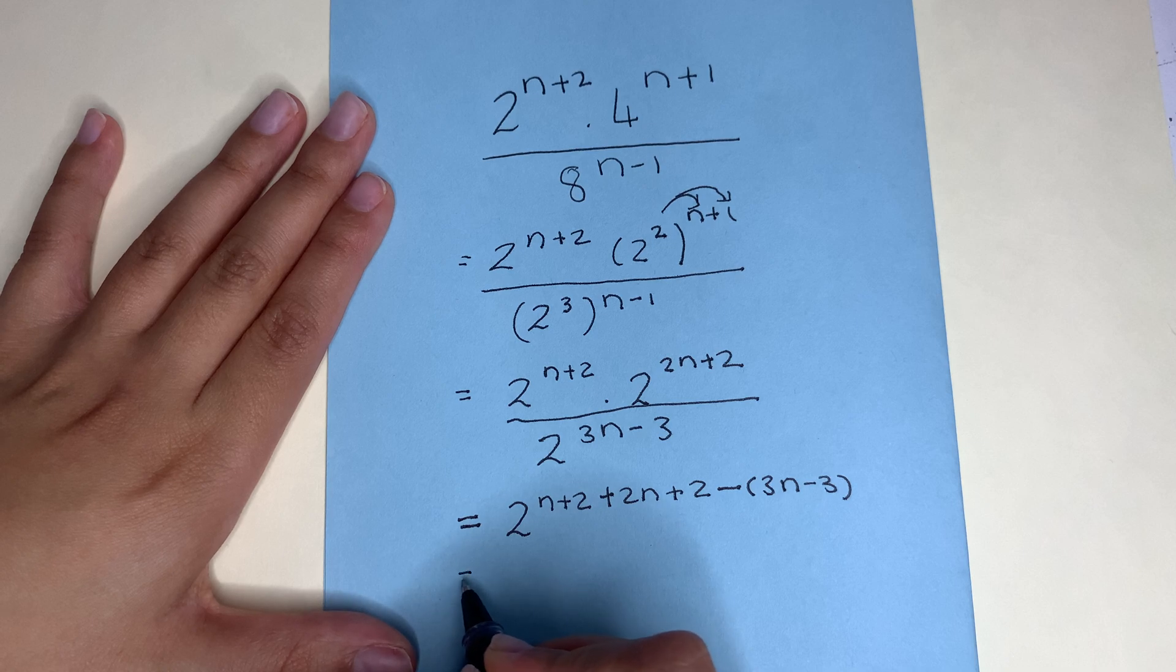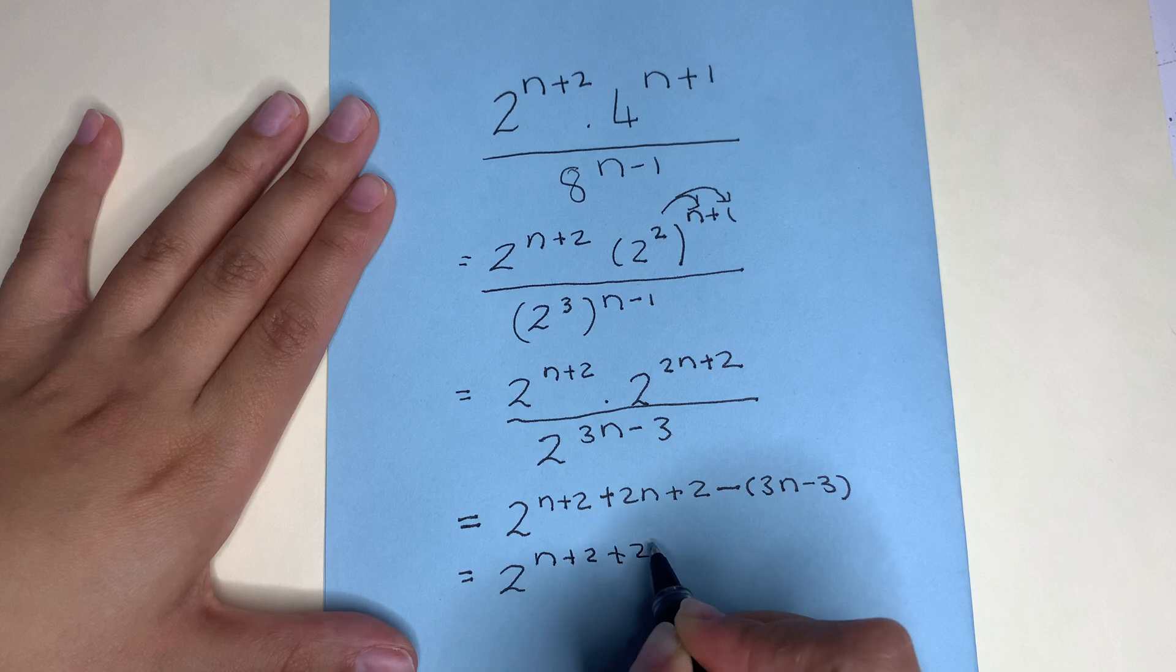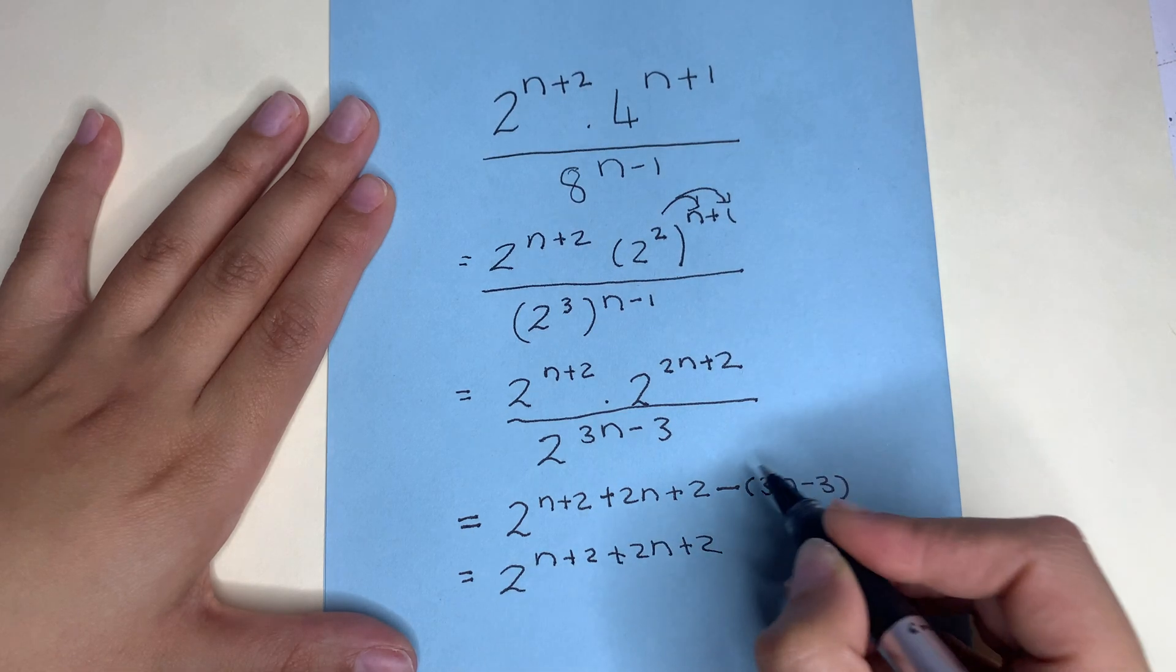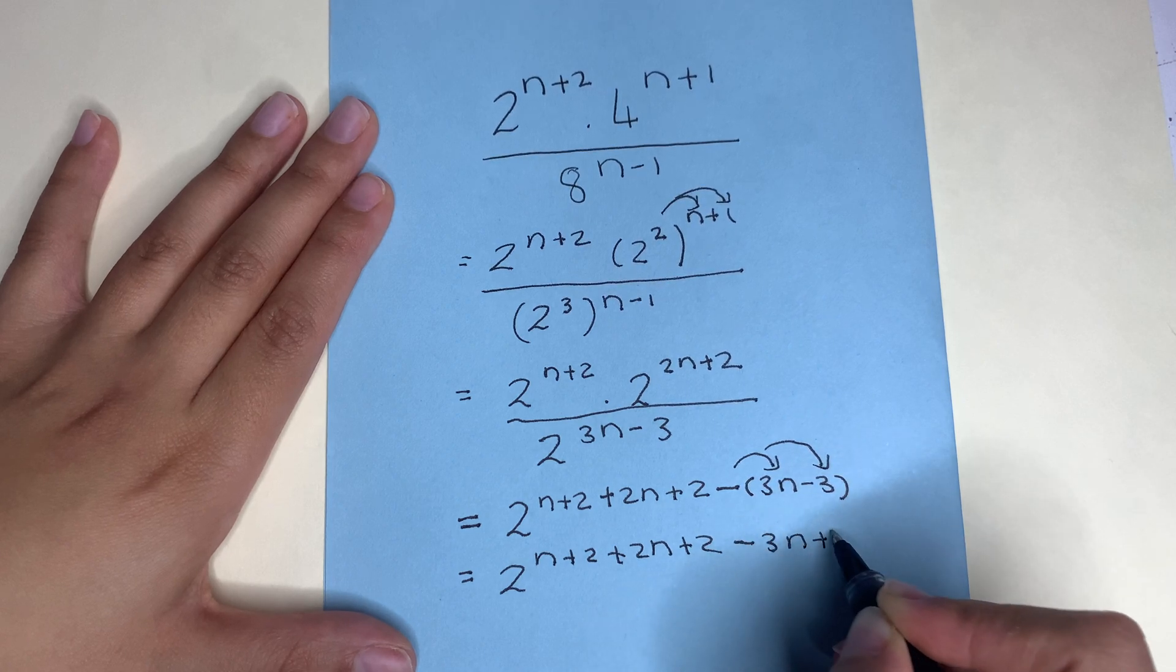Now continuing we've got 2 to the power of n plus 2 plus 2n plus 2. Distributing this negative inside the bracket, we've got minus 3n plus 3.